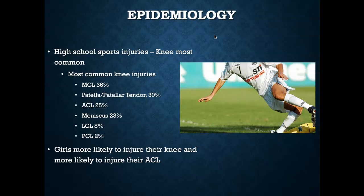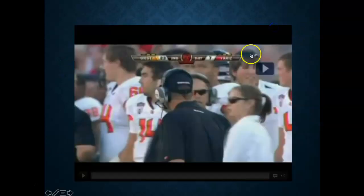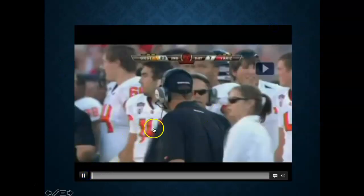We know that females are more likely to injure their ACL compared to male counterparts. There is extensive research identifying both extrinsic and intrinsic factors. Extrinsically, females have weaker hamstrings and tend to land in genu valgus. Intrinsically, during menstruation there is increased laxity, which increases ACL injury risk. So we have increased knee injuries among high school athletes, and females across sports and levels are more apt to injure their ACL.